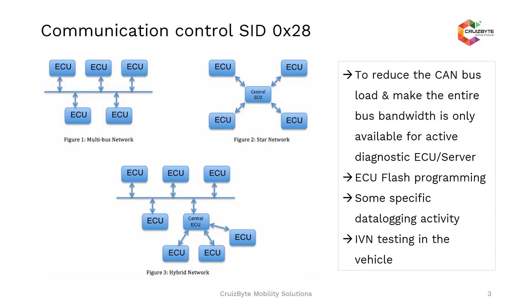On the left-hand side, where you see Figure 1 multibus network, it's a typical CAN networking architecture where you have N number of ECUs connected on a CAN bus, and every ECU has direct connectivity to the OBD2 port. That means the CAN lines are connected to the OBD2 port, so the tester has direct access to all the ECUs in the network.